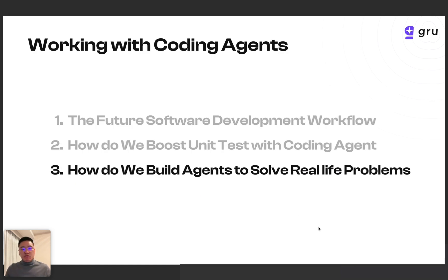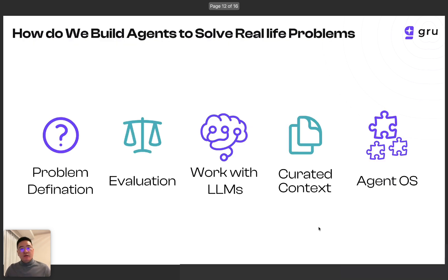Next, I'm going to dive a little deeper into how we built guru to solve real-life problems. To build an agent, the first and most important thing is to define the problem itself. A clear, concrete, and doable problem is crucial. For example, unit test is a problem, but software engineering is not a problem. Once we have the problem, we need to build datasets for evaluation and the evaluation harness. Then we work on LLMs and building context. And finally, we need an agent OS or framework to orchestrate everything together.